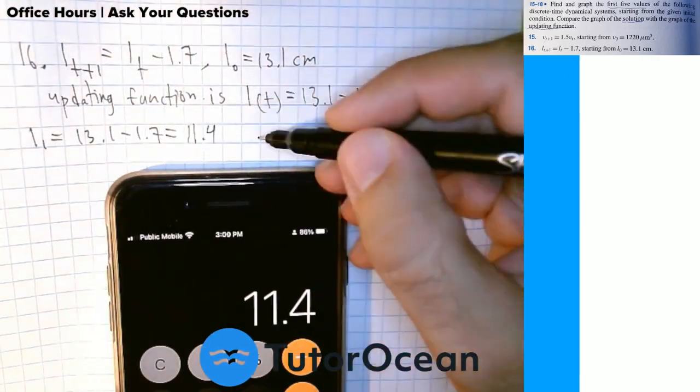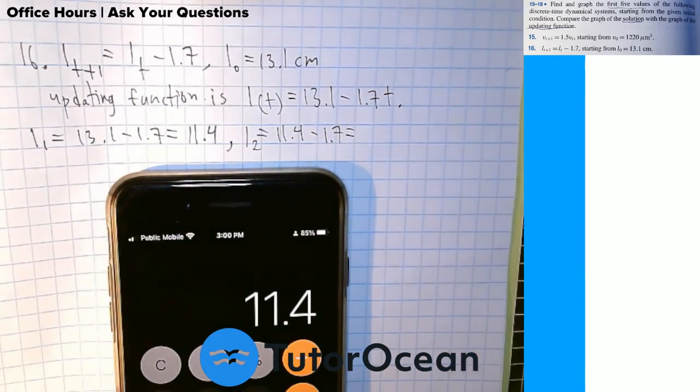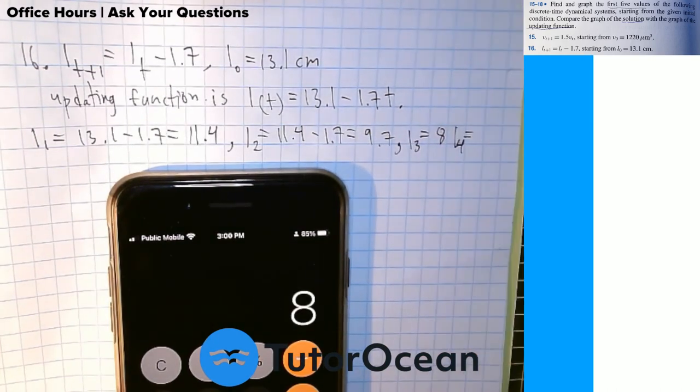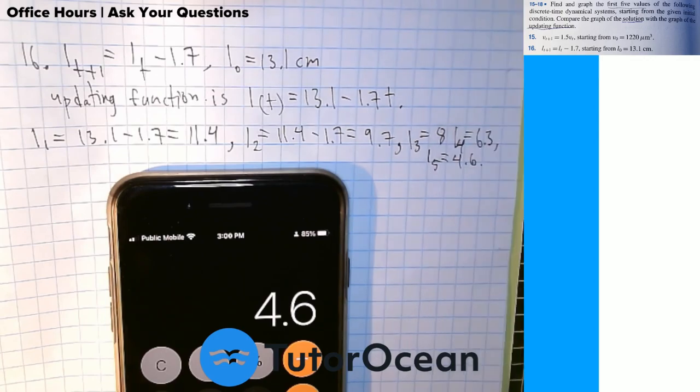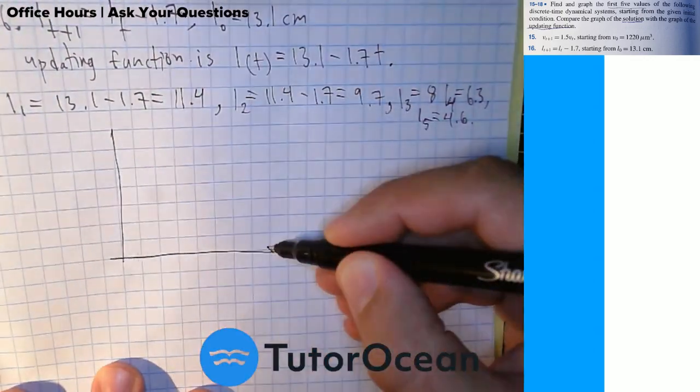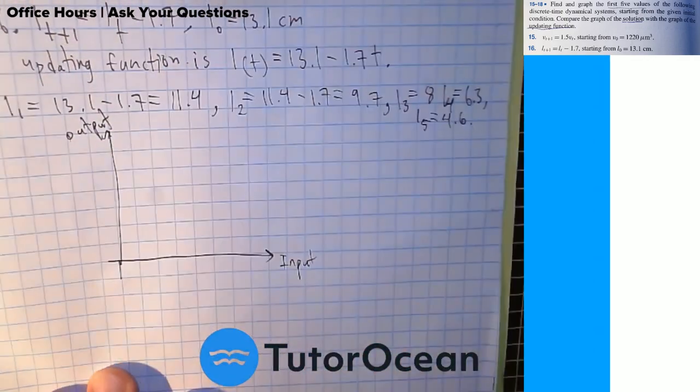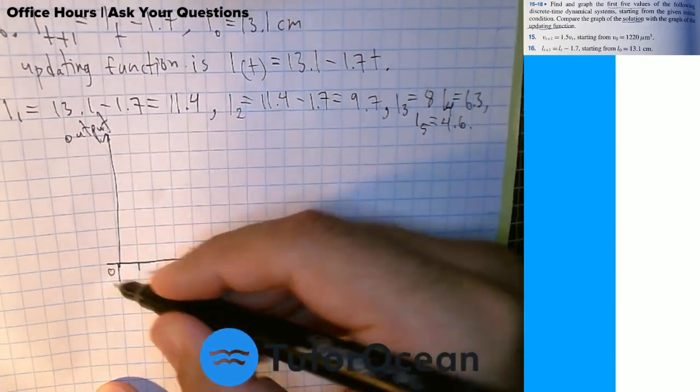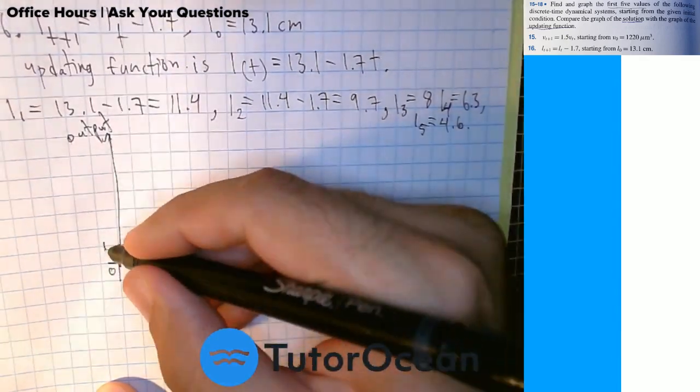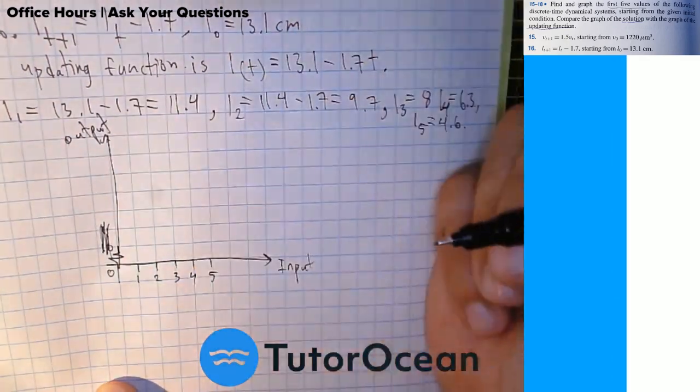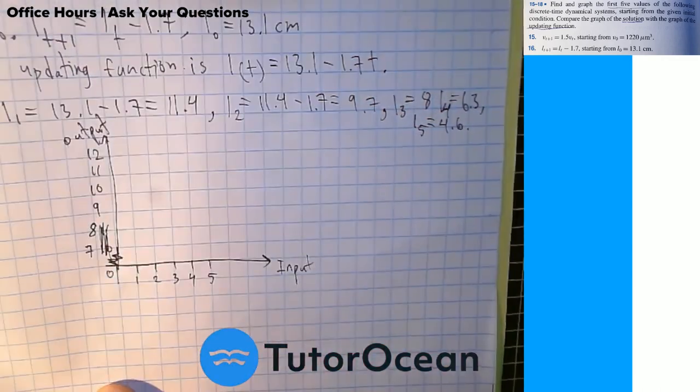And the starting point is L0 equals 13.1 centimeters. We write the updating function and we can see that it starts at 13.1 centimeters and it decreases in a linear way, minus 1.7t.